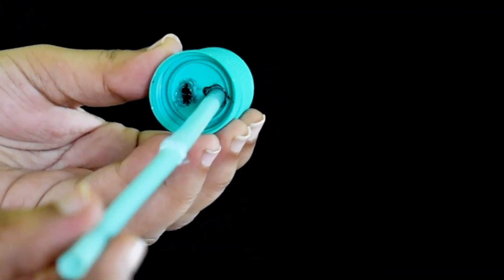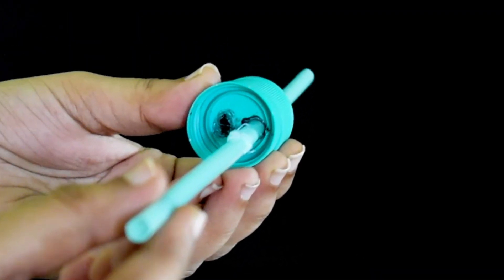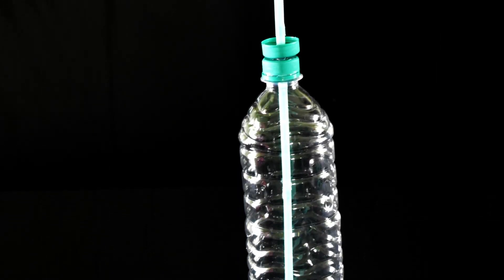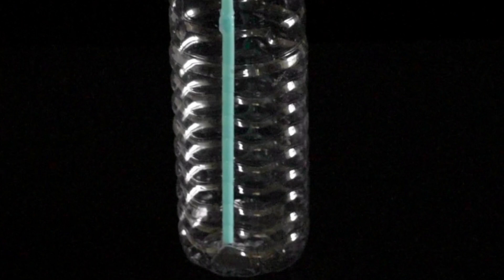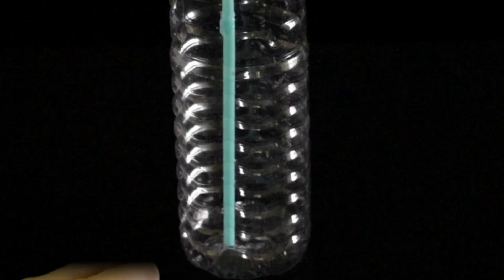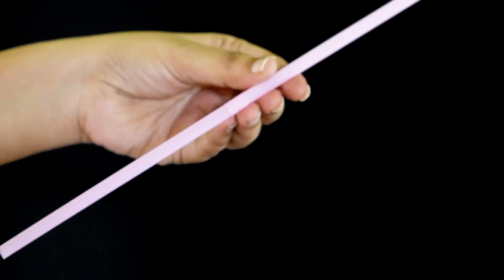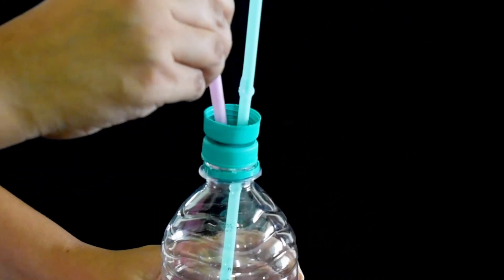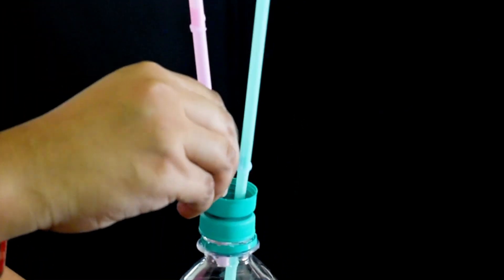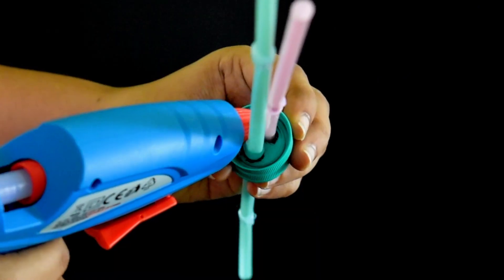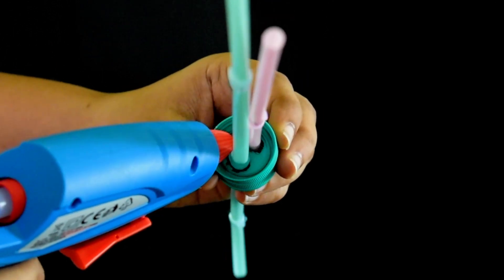Thread the straw through one of the holes and place it in the bottle. The straw should be just above the base of the bottle. Repeat the same steps for two more straws and put it inside another hole in the lid. Now glue the cap to prevent any water leaks.